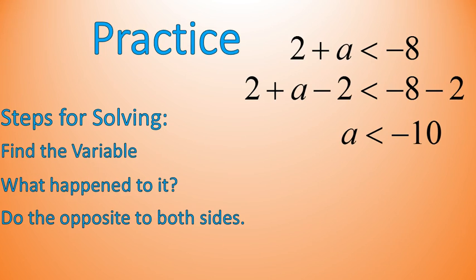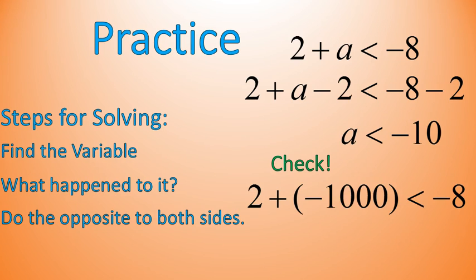I'm going to check my work. This says a can be anything less than negative 10. And I can pick a ridiculously small number to check my work as long as it's less than negative 10. So I'm going to use negative 1,000 just because I can. So negative 1,000 is definitely less than negative 10. 2 plus negative 1,000 gives me negative 998. And that is very much less than just negative 8. So this is a way I can check my work and make sure that it is correct.